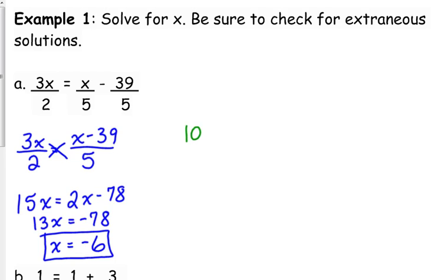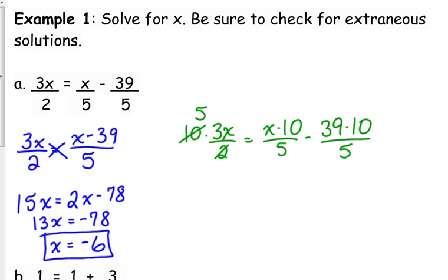I'm going to go through and multiply each term by the LCD of 10. I'm not actually going to multiply it out. I'm going to see how I can simplify it. For the first term, 10 over 2 is 5. For the second one, 10 over 5 is 2, and for the last one, 10 over 5 is 2. So when I multiply these out, guess what I get? The exact same equation that I have right there.